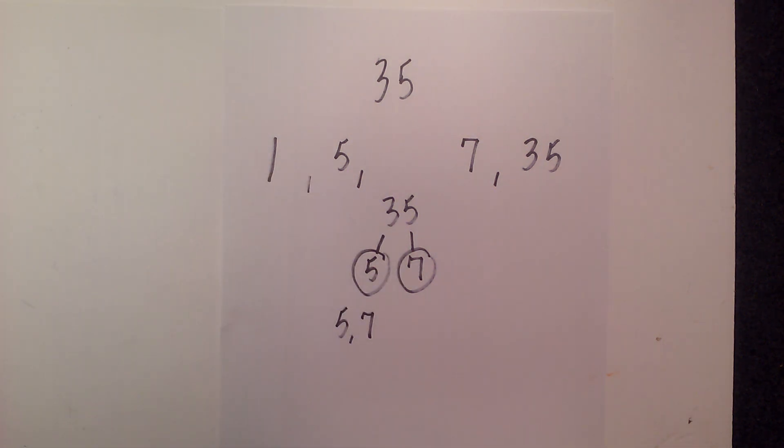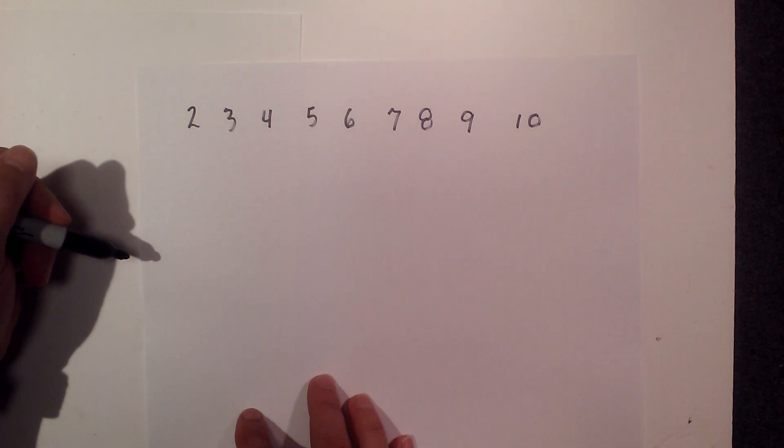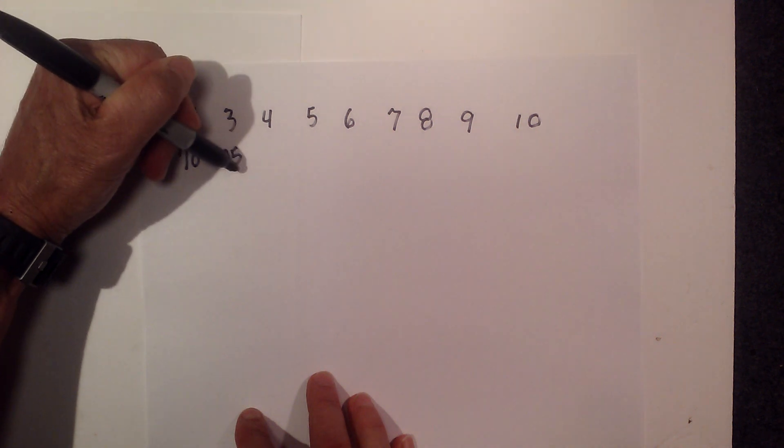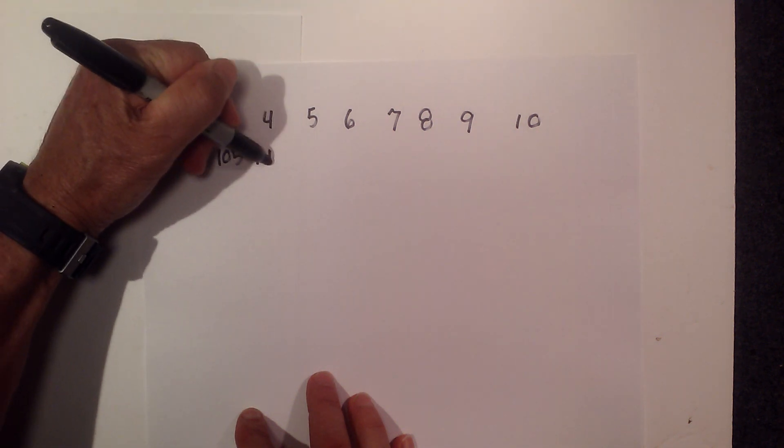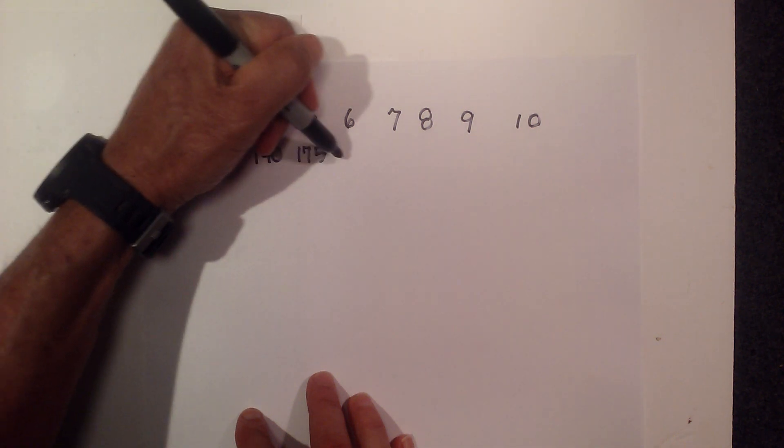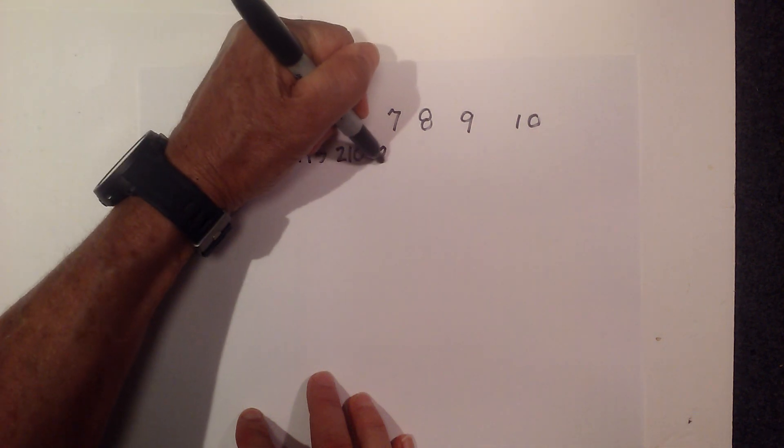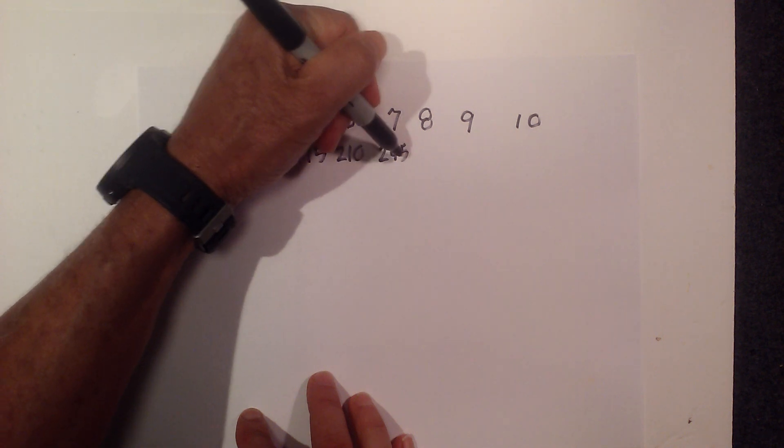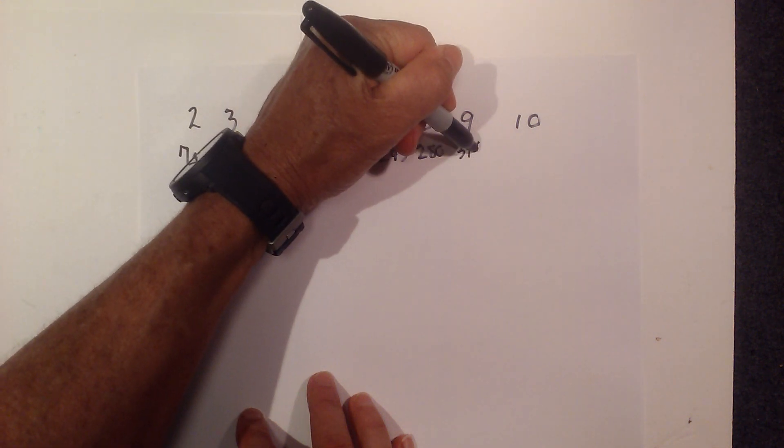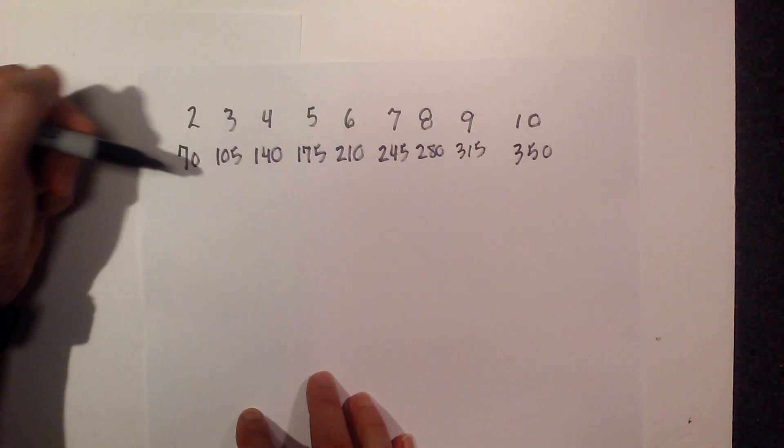Now let's find the multiples of 35. 35 times 1 is 35, times 2 is 70, times 3 is 105, times 4 is 140, times 5 is 175, times 6 is 210, times 7 is 245, times 8 is 280, times 9 is 315, and times 10 is 350.